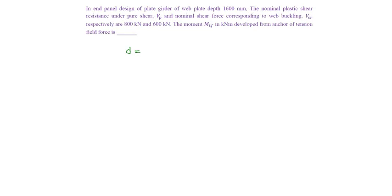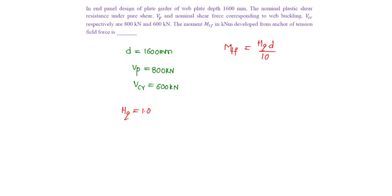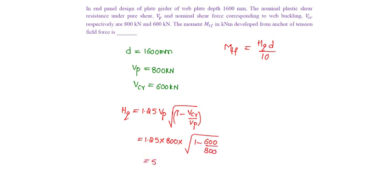Given depth of the web as 1600 mm, VP as 800 kN and VCR as 600 kN. MTF is given as HQ into D by 10, where HQ is 1.25 times VP into under root of 1 minus VCR by VP, which is equal to 1.25 into VP is 800 into under root of 1 minus VCR is 600 by VP is 800, which is equal to 500 kN.